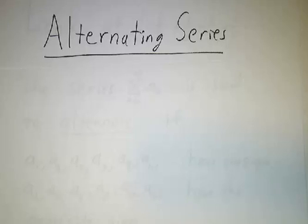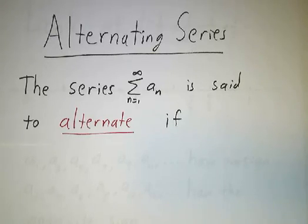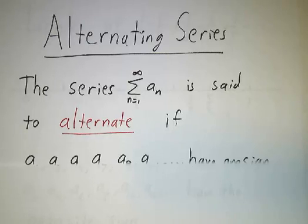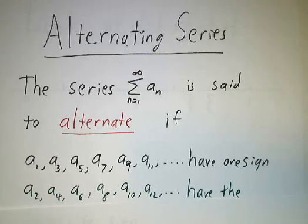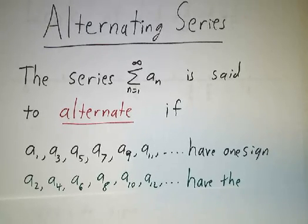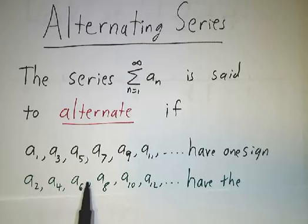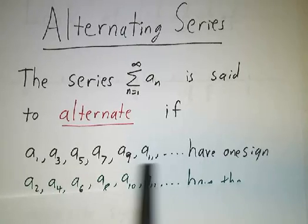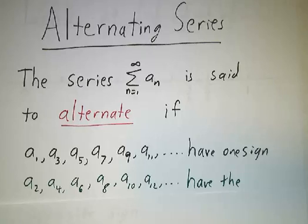Now we're going to start talking about series where the terms aren't all positive, and we'll start with alternating series, which is the nicest kind. A series alternates if, as the name implies, the signs of its terms alternate — so a1 positive, a2 negative, a3 positive, a4 negative, and so on, or the other way around. All the odd terms have one sign and all the even terms have the opposite sign.